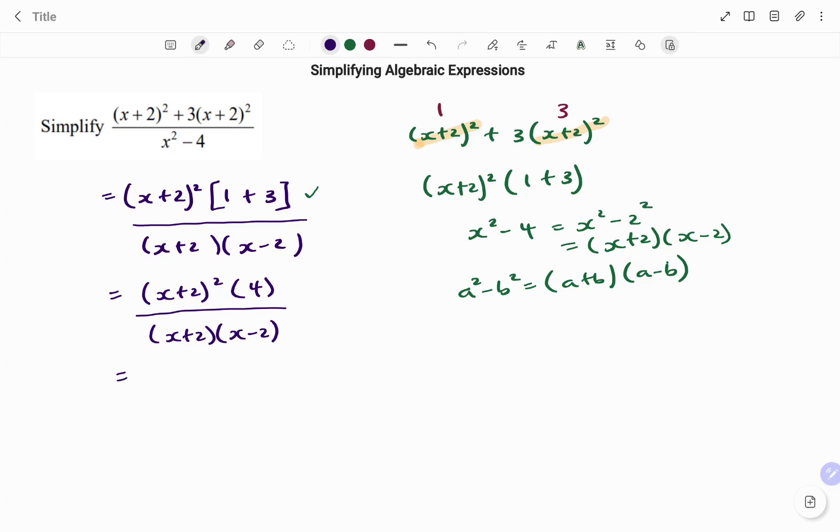If I expand what I have at the top, I have x plus 2 times x plus 2 times 4 divided by (x plus 2)(x minus 2).